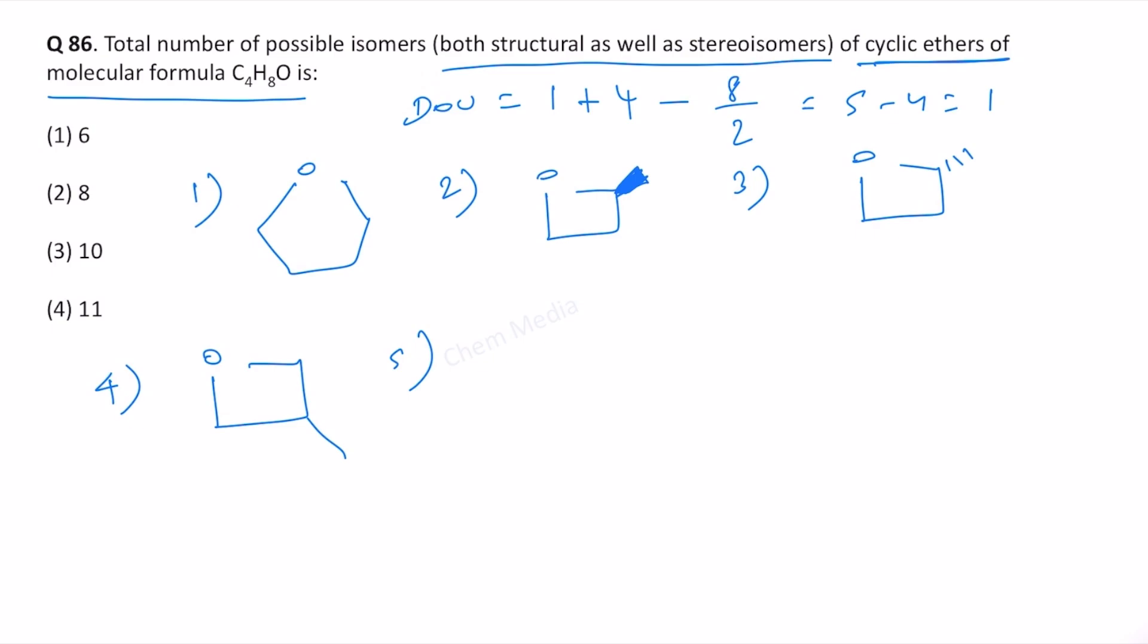And then number five, we can also write 2,2-dimethyl oxytane that doesn't have a chiral center because we have two methyl groups. And then number six, we can also write 2-ethyl oxytane that has a chiral center. Therefore, we need to consider it as two isomers.